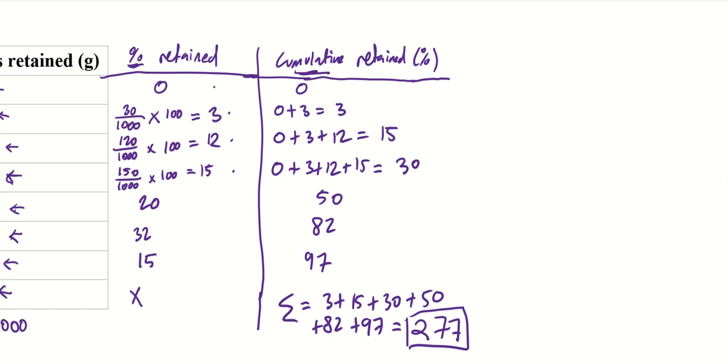Now there's this final column that we're going to do now. And it's just to double check our working. So that's the cumulative passing. Again it's percentage.